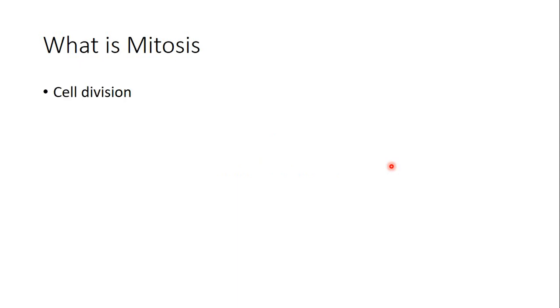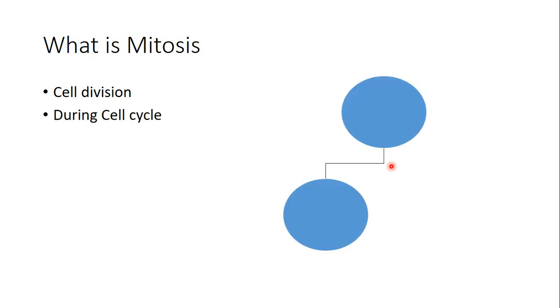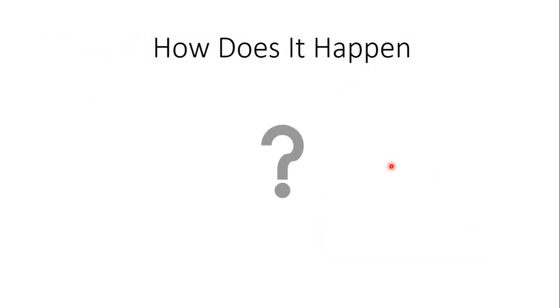What is mitosis? Mitosis is a process of cell division in which one cell gives me two exactly identical sister cells. This mitosis happens during the cell cycle, in which one cell gives me two identical cells. In the human body, the cell has 46 chromosomes, and then I get two cells with 46 chromosomes each. In order to understand mitosis, you first have to understand the full cell cycle.